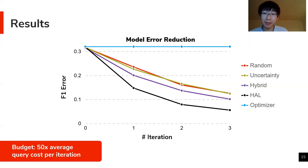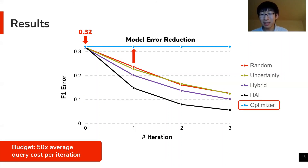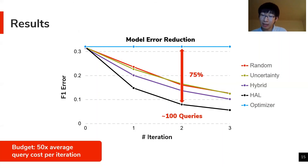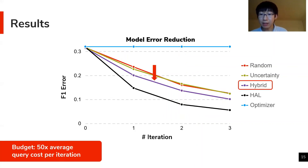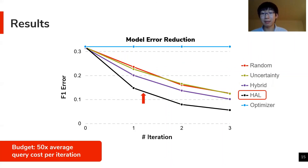At iteration zero, the model has an error of 32%, similar to just directly using the optimizer's estimates, which further motivates the need to improve model prediction during deployments. The most important highlight is that at iteration two, where we only execute approximately 100 queries selected by HAL, we already reduce the model's error by 75% — a very significant gain with only a small cost. The best-performing baseline is hybrid, which shares a similar use of randomness to robustify the strategy. HAL achieves the best overall performance because of its robust, cost-sensitive, and batch-friendly design.